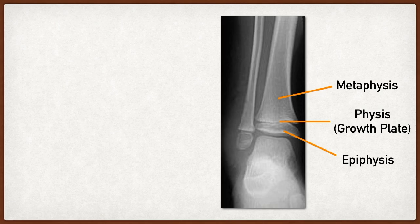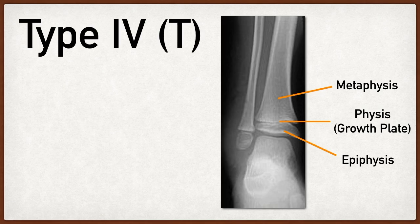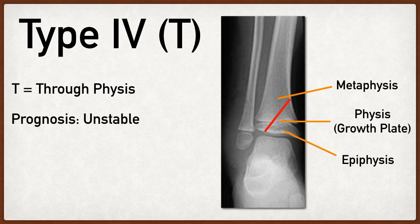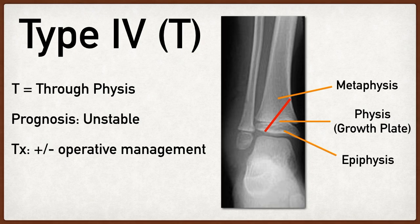A type 4 Salter Harris fracture is a fracture that travels through the metaphysis, through the physis, and through the epiphysis. The way to remember this is to use the fourth letter of SALTER, which is T, and that will help you remember through the physis. These fractures are unstable and can potentially lead to limb length discrepancies, so operative management should be considered.